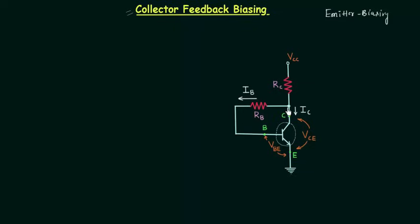We are introducing the feedback from collector to base. First we will calculate the current IC and the voltage VCE. They are the coordinates of the operating point, and after this we will discuss the advantages and disadvantages of collector feedback biasing.